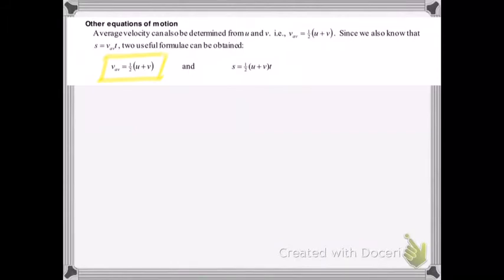And if we substitute Vav into the other formula we started with, then you get S equals half U plus VT. Remember that the most basic formula from the definition of average velocity was this, and so rearranging that just gives Vav times T. So what we've done is we've substituted this formula in place of the Vav to create this formula.